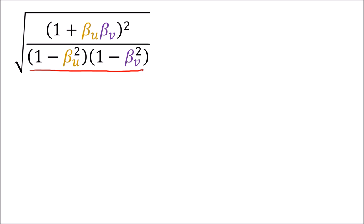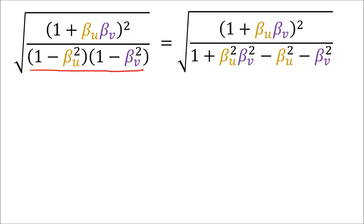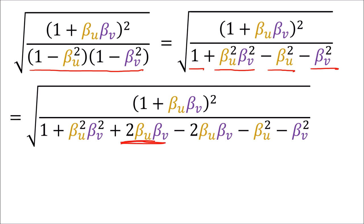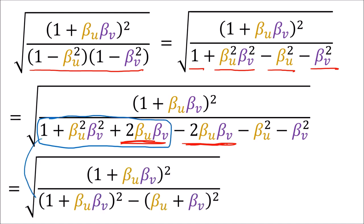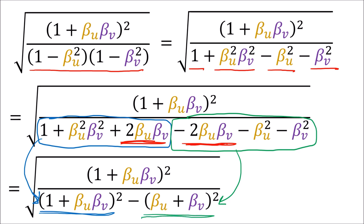Next, we expand the multiplication in the denominator. (1 minus beta-u-squared) times (1 minus beta-v-squared) gives us 1 plus beta-u-squared beta-v-squared minus beta-u-squared minus beta-v-squared. In the denominator, we add and subtract the same term — 2 beta-u beta-v — which doesn't change the equation. The first three terms in the denominator can then be factored into (1 plus beta-u beta-v) all squared, and the last three terms factor into negative (beta-u plus beta-v) all squared.